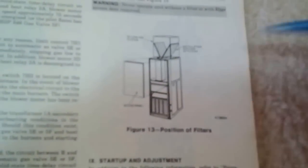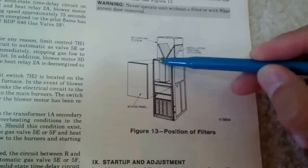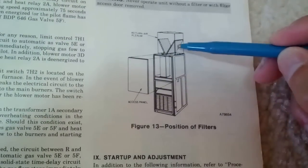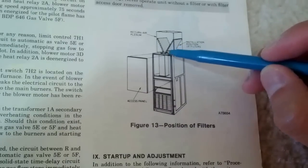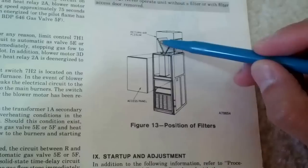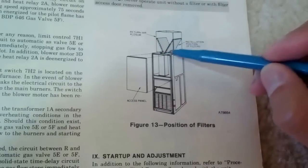What's important here is that you need to open this top access panel in order to get to these filters, and they're actually a little bit awkward. They're up above, there's two of them, and they sit in a V shape, so there's one here and one here.